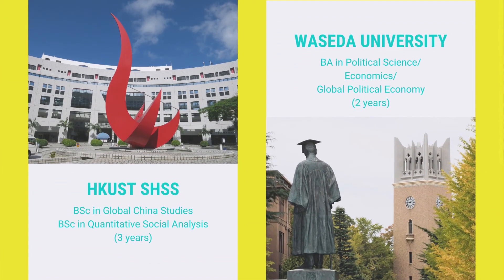Our school also has a partnership with Waseda University in Japan, and we collaborate with them to offer a dual degree program to our undergraduate students. Students in this program spend three years to complete their undergraduate studies in the School of Humanities and Social Science at HKUST, and then go to Waseda for two more years of bachelor studies. Students end up obtaining two bachelor's degrees — one from HKUST School of Humanities and Social Science, and one from Waseda University — all within five years.